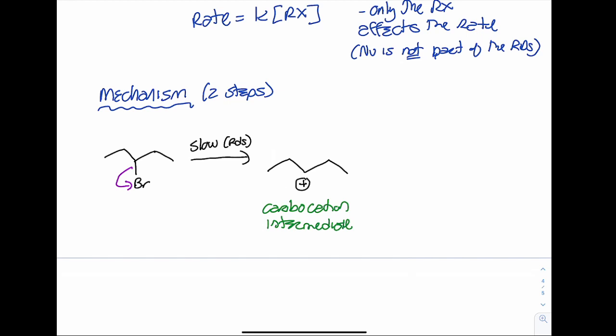That carbocation intermediate is planar. That carbon has one hydrogen on it, so it's sp2 hybridized — it's flat. We'll look at that when we look more specifically at the stereochemistry coming up in a minute.